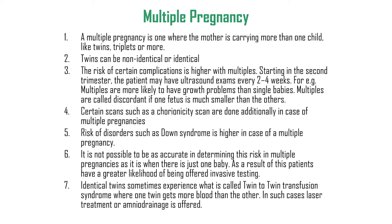To summarize: a multiple pregnancy is one where the mother carries more than one child, such as twins or triplets. Twins can be non-identical or identical, and the risk of complications is higher with multiples. Ultrasound exams may be needed every two to four weeks from the second trimester. Multiples are more likely to have growth problems and are called discordant if one fetus is much smaller than the other. Chorionicity scans are done additionally, and the risk of Down syndrome is higher, making patients more likely to be offered invasive testing. Identical twins may experience twin-to-twin transfusion syndrome, for which laser treatment or amnio drainage is offered.